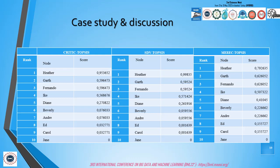For the results of the combinations—CRITIC TOPSIS, standard deviation TOPSIS, and MEREC TOPSIS—we can see that these three combinations have the same behavior on the ranking. For the Krackhardt network, the ranking is as follows: we have Heather first, then Carol, Fernando, Ike, Diane, Beverly, Andrew, Ed, Carol, Jane. Jane is last. We have the same ranking. The first rank is for Heather for the three techniques, and Jane is the last with a score of zero in all the combinations.